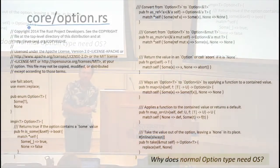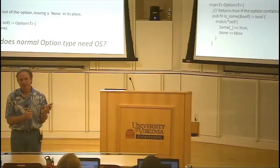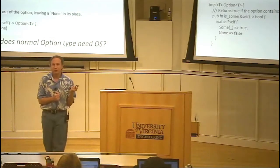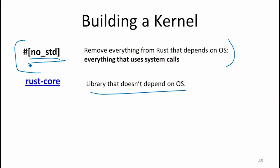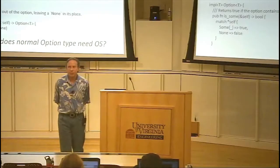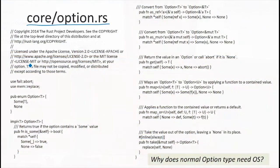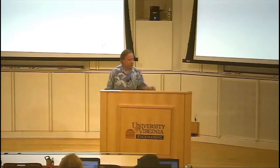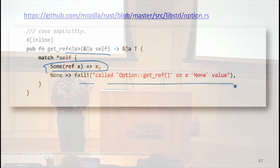Does option really depend on an operating system? Everything in Rust that depends on an OS is part of the standard library, which you remove using a directive. The original option code has some methods that can fail — for example, getting a reference assuming it is Some, and if it's not, failing, which prints out a message. That printing depends on an operating system, so failing depends on an operating system.